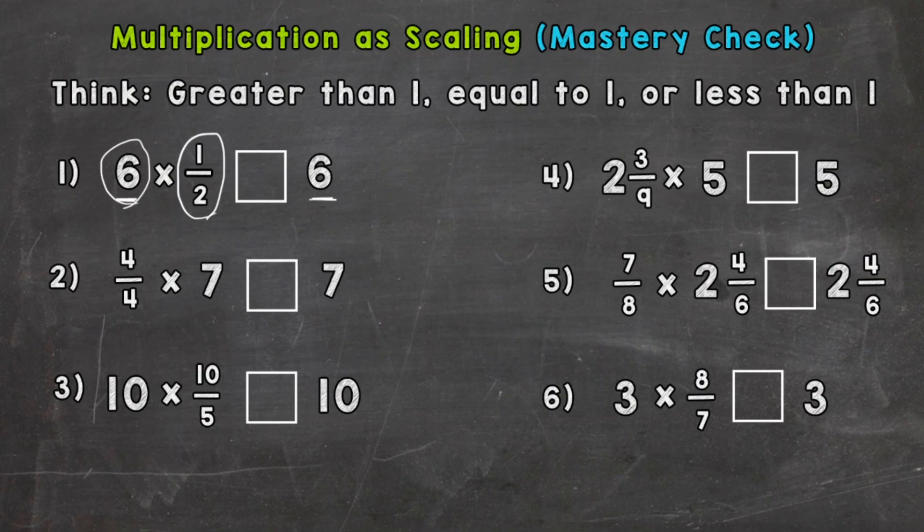Number two, we have a 7 on each side, and on the left we're multiplying that 7 by 4/4, which is equal to a whole. So 1 times 7 is equal to 7.